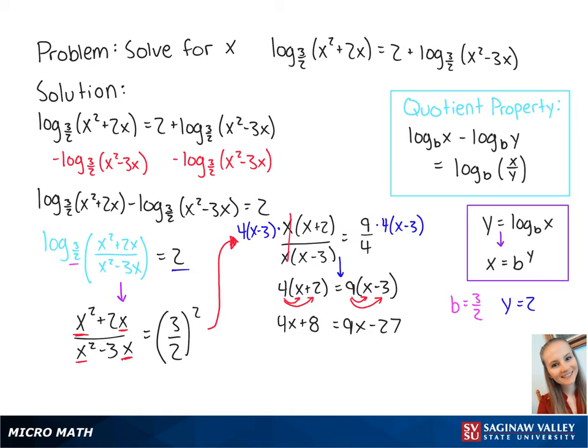To isolate the x, we're going to add 27 and subtract 4x from both sides to get 35 equals 5x. Now we divide both sides by 5 to get x equals 7. If we plug 7 into the original equation, we get positive logs. So x equals 7 is the final answer.